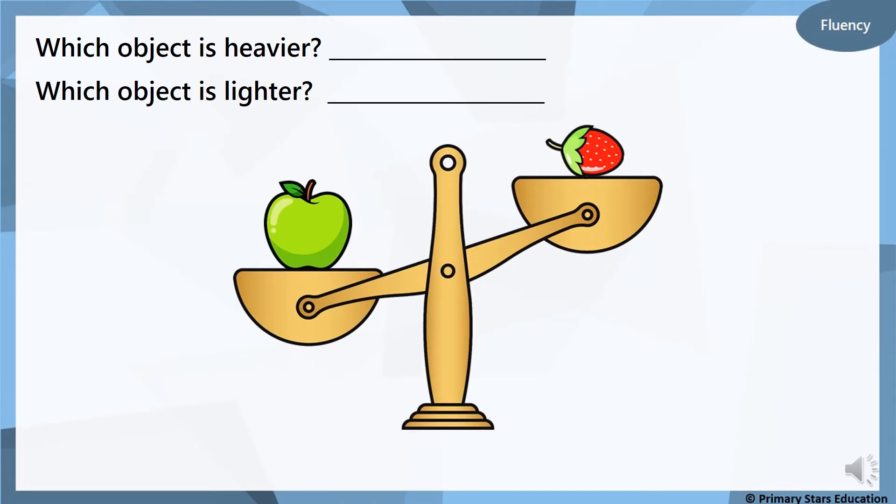Just a little bit of a recap with the balance scales now. We can use balanced scales to tell whether something is heavier or lighter than another object. So have a look at the picture on screen and which object do you think is heavier? It's the apple. So which object is lighter? The strawberry. The heavier object is at the bottom and the lighter object is at the top. It's just like if you play on a seesaw at the park.